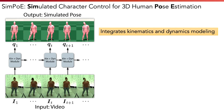To tackle these issues, we propose SIMPLE, a method that integrates both kinematics and dynamics modeling to achieve accurate and physically plausible human pose estimation. At a high level, SIMPLE uses a recurrent unit called the kinematics plus dynamics module to map a sequence of video frames into human poses. From a temporal modeling perspective, we are essentially replacing recurrent units such as LSTM with our more structured kinematics plus dynamics module.